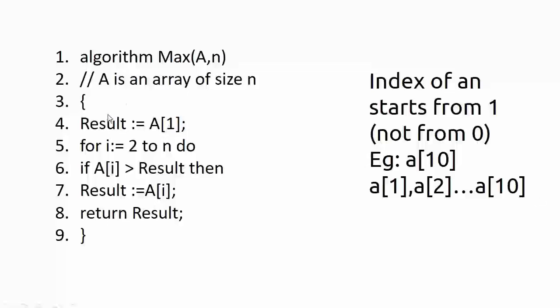Then 'for i := 2 to n do' iterates from index 2 to n with default step 1. Inside the loop, 'if a[i] > result then result := a[i]' updates result whenever a larger element is found. After the loop exits, result holds the maximum value of the array. This example demonstrates all the pseudo code conventions we have discussed.